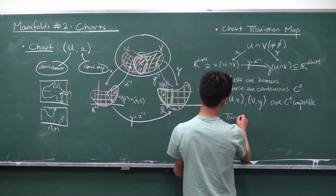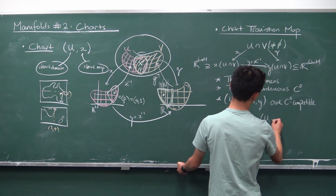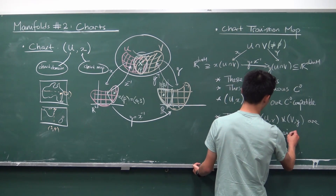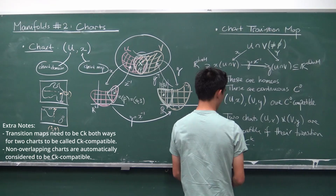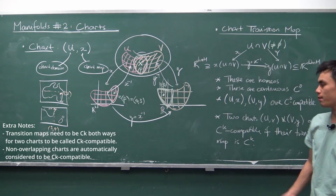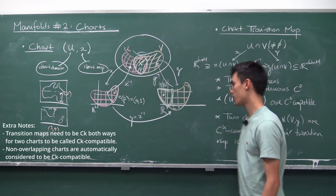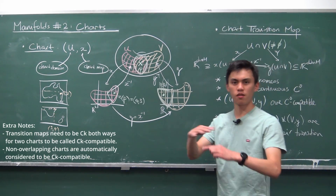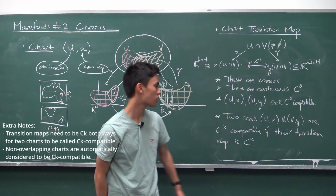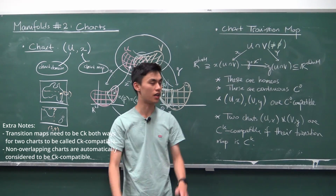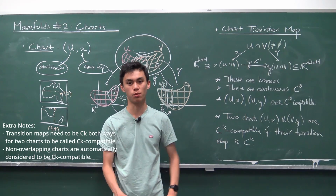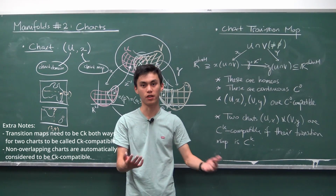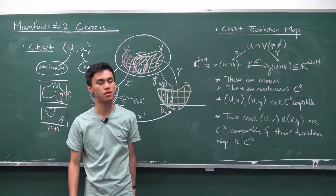We say that two charts (U, X) and (V, Y) are Ck compatible if their transition map is actually Ck. Notice that transition maps are always maps between Euclidean spaces, so we know exactly what it means for a map to be Ck. If two overlapping charts have a transition function that is Ck, then those two charts are Ck compatible because they work nicely with each other at the level of k-times differentiability. So that's essentially what chart transition maps are — they give us a way to transform one coordinate system into another on our manifold.